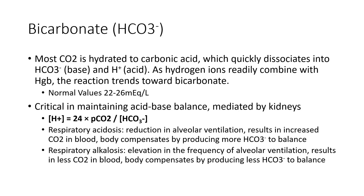Most carbon dioxide is hydrated to carbonic acid, which quickly dissociates into its conjugate base, bicarbonate, and its conjugate acid, H+. The more carbon dioxide we have, the more this breaks down. Bicarbonate is crucial in maintaining pH — it's our buffer. Normal values are between 22 and 26. Too much bicarbonate reflects a situation of alkalosis; too little bicarbonate reflects acidosis. We'll spend more time on this in our ABG lecture.